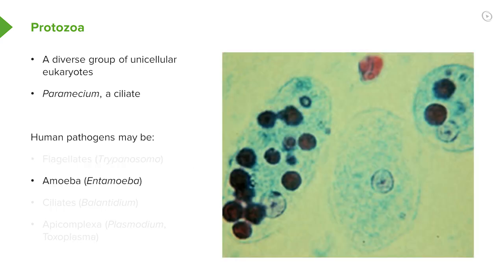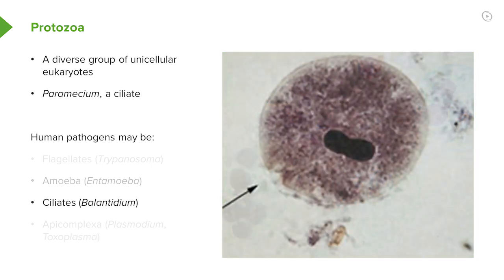Amoeba are also protozoa, and some of these are known to cause human diseases. For example, the entamoeba, shown in this photograph, are agents of diarrheal disease. There are ciliated protozoan parasites as well — this one is called balantidium, which in humans can cause gastrointestinal disease.